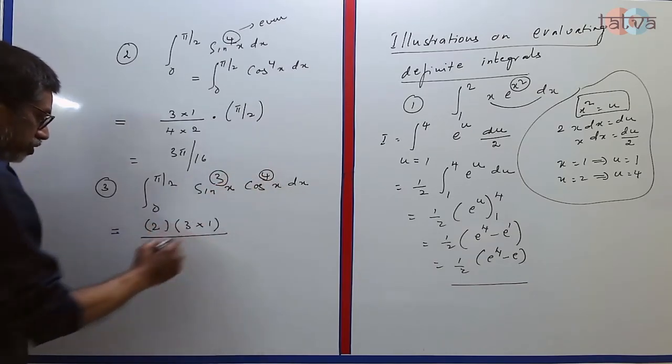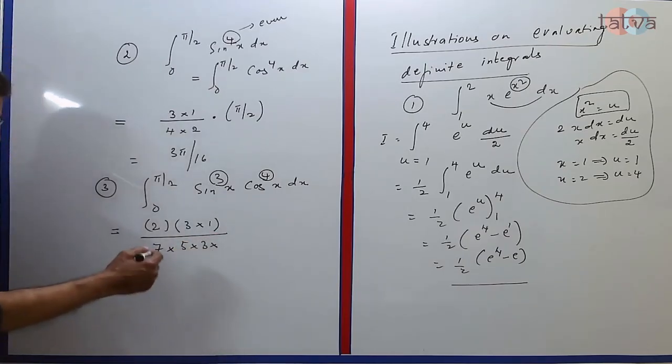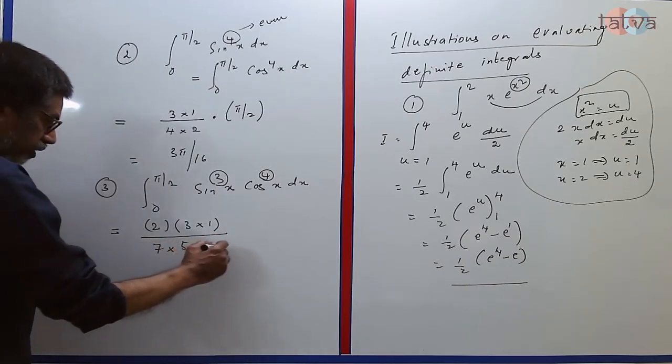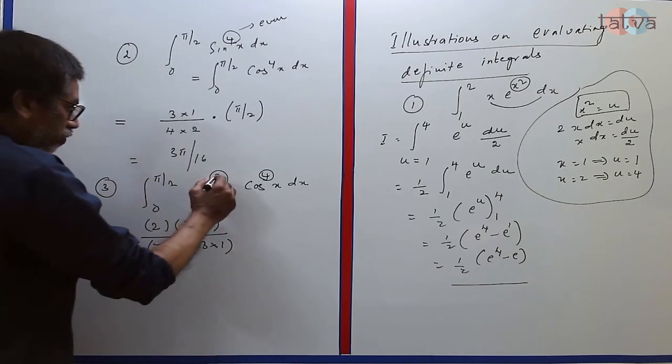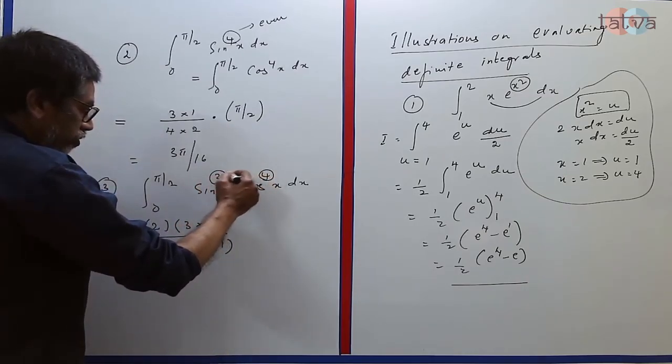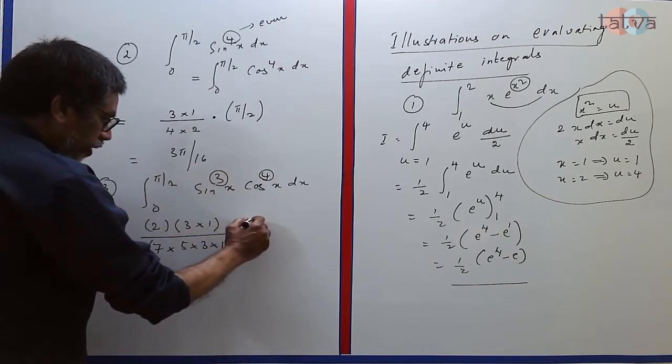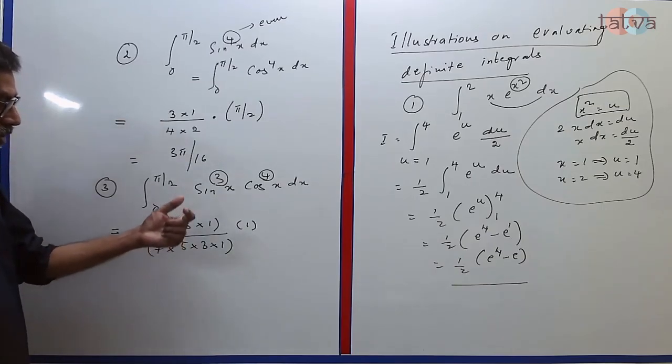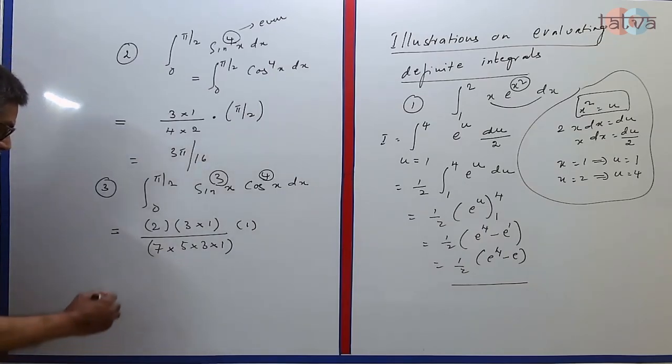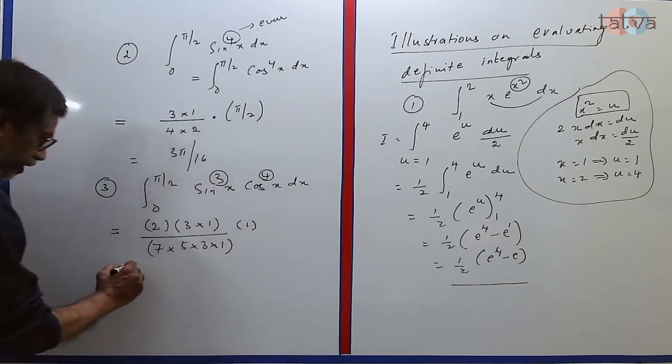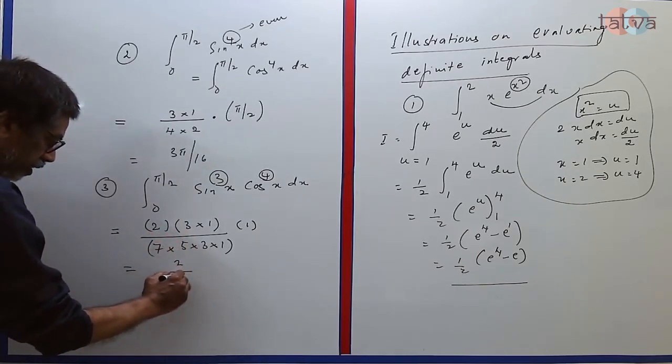Then the denominator. You start with the sum of these 2 powers, then keep reducing 2 at a time: 7, 5, 3, 1 is also allowed, not beyond that. Now comes the main point. When you find any one of these 2 powers odd, don't write π/2, you write 1. What happens when both are even? You multiply with π/2. So whatever is this answer, a 3 can get cancelled here. We are left with 2/35.